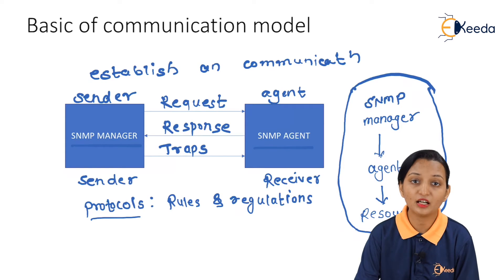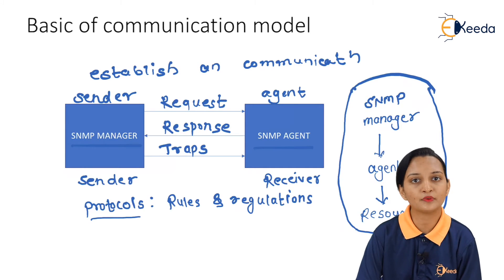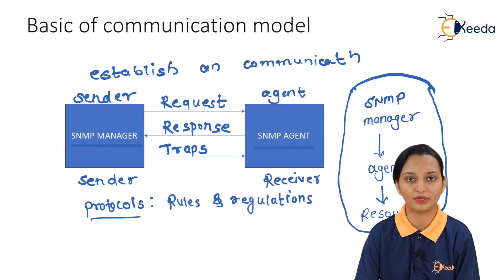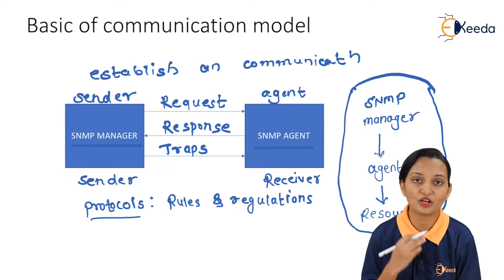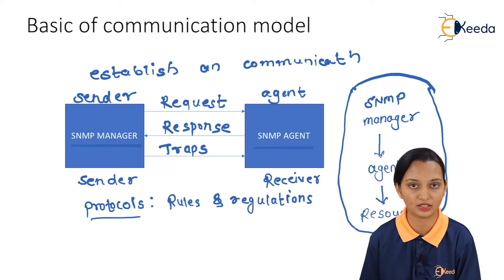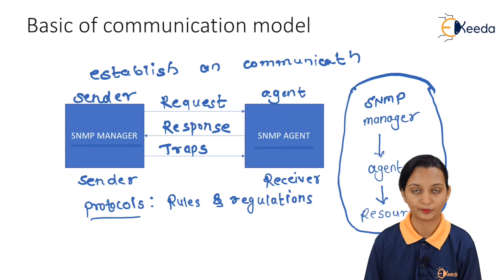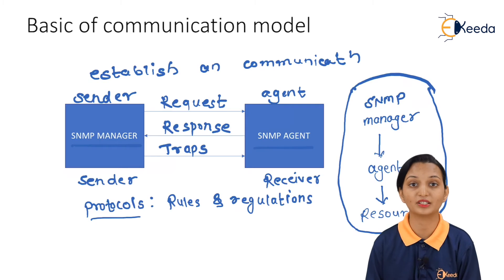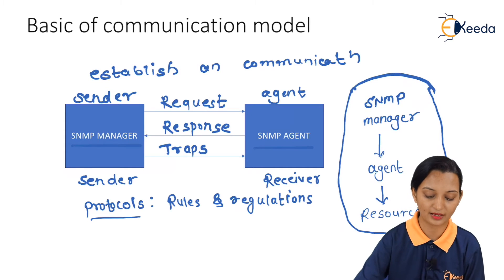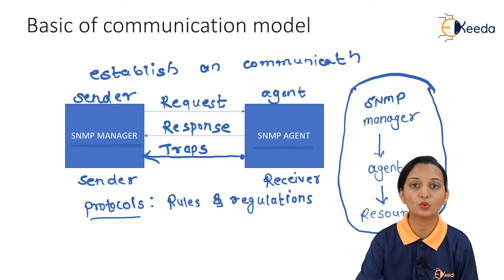The manager is able to transmit the data, so the manager has to start the communication. The agents, as receivers, are able to receive the data; they send a notification back regarding whether they are able to receive the data or not. Along with that, if they want to send an emergency notification, then they are able to send TRAPS. So, traps are generated from the agent side and they are directed towards the manager side.